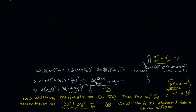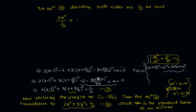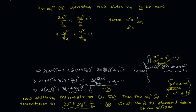Now in equation 3, dividing both sides by 1/12, we have 2x²/(1/12) + 3y²/(1/12) = 1. Simplifying: x²/(1/24) + y²/(1/36) = 1. Comparing with the standard form, we get a² = 1/24 and b² = 1/36.